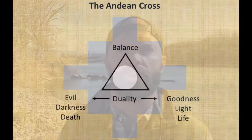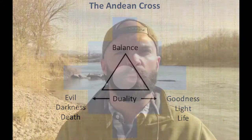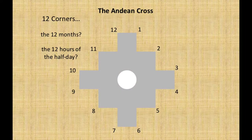In some books and on a few websites I've seen a triangle drawn around the circle representing Cusco, where the apex is sometimes labeled 'balance' and the base 'duality' — representing a spectrum of light and darkness, good and evil, man and woman. I've also seen the explanation that the 12 points formed around the cross may represent the 12 calendrical months of the year.